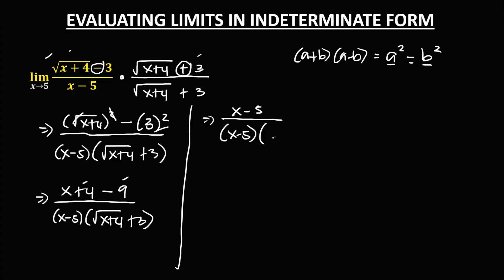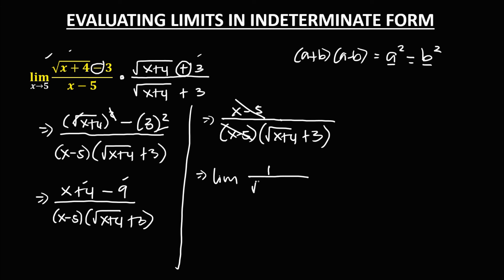We can now cancel the (x - 5) terms. The new equation is the limit of 1 over (√(x + 4) + 3) as x approaches 5.